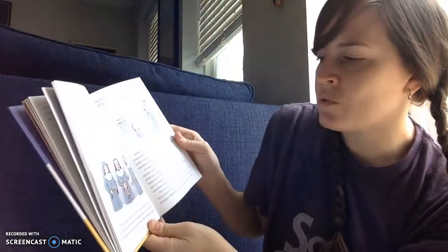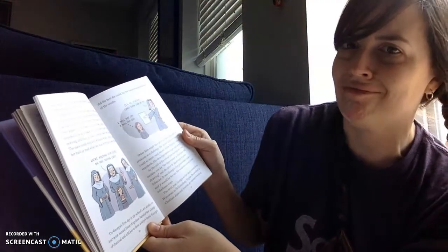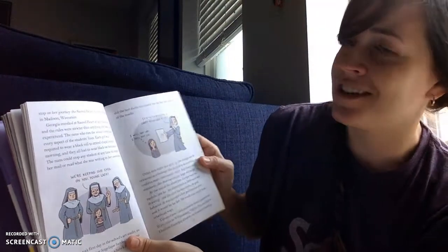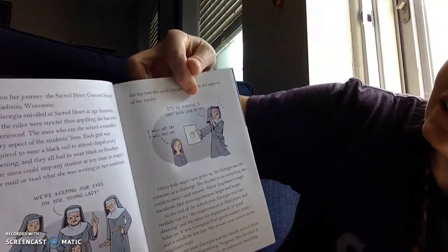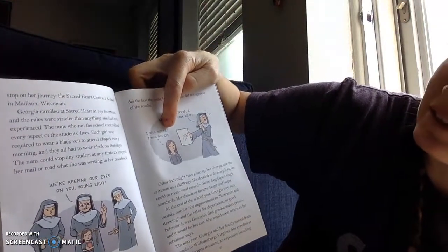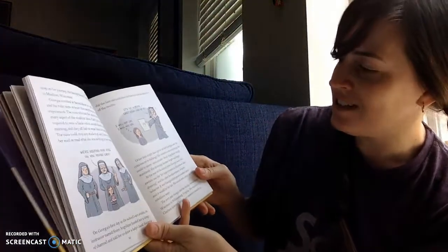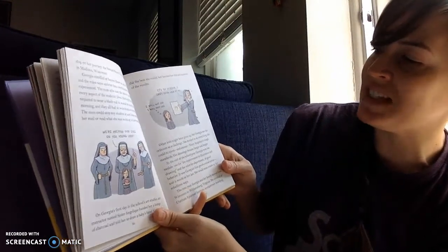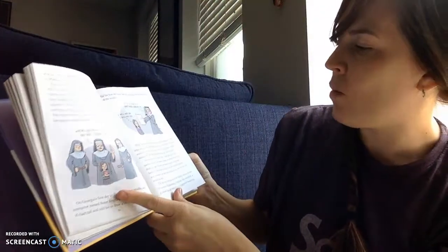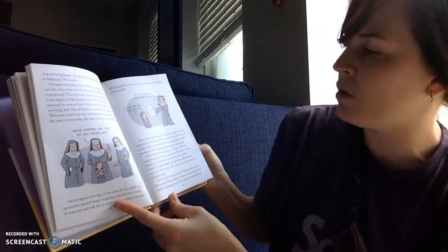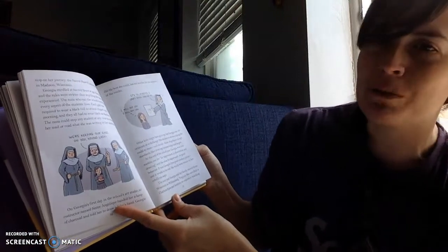On Georgia's first day in the school's art studio, an instructor named Sister Angelique handed her a lump of charcoal and told her to draw a baby's hand. That's a weird subject. Georgia did the best she could, but her teacher did not approve of the results. It's so hideous I can't even look at it. I will not cry. Other kids might have given up, but Georgia saw the criticism as a challenge. She decided to do everything she could to meet and exceed Sister Angelique's tough standards. Her drawings became larger and larger. At the end of the school year, Georgia won two medals. One for improvement in illustration and drawing, and the other for deportment or good behavior. It was Georgia's first good conduct prize, and it would be her last. She would return to her rebellious ways. Atta girl.